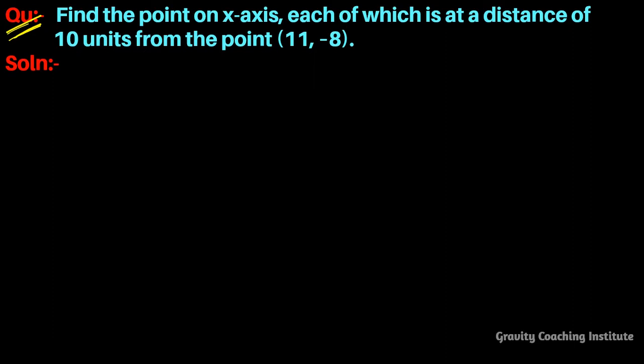Question: Find the point on x-axis, each of which is at a distance of 10 units from the point (11, -8). So since we have a point on x-axis which is at a distance of 10 units, we will find the point. Suppose we have a point on x-axis - any point on x-axis always has y-coordinate zero.